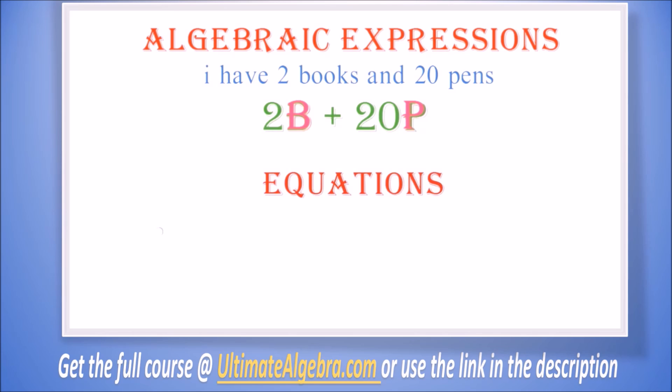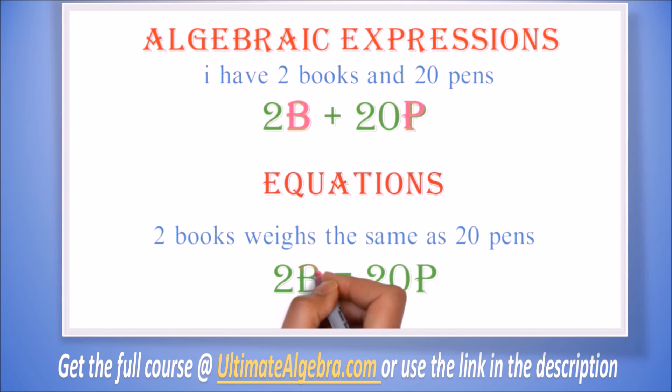Equations show the relationship between two algebraic expressions by the introduction of an equal sign. For example, when we say 2 books weighs the same as 20 pens, we can write it as 2b equals 20p, where b is for weight of book and p is for weight of pen.